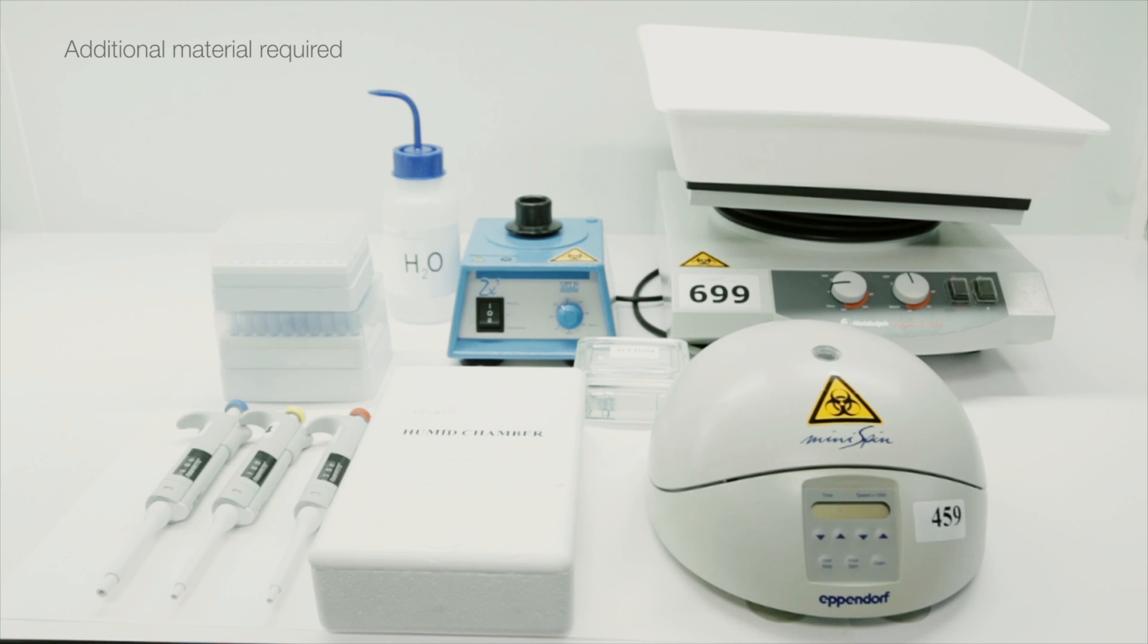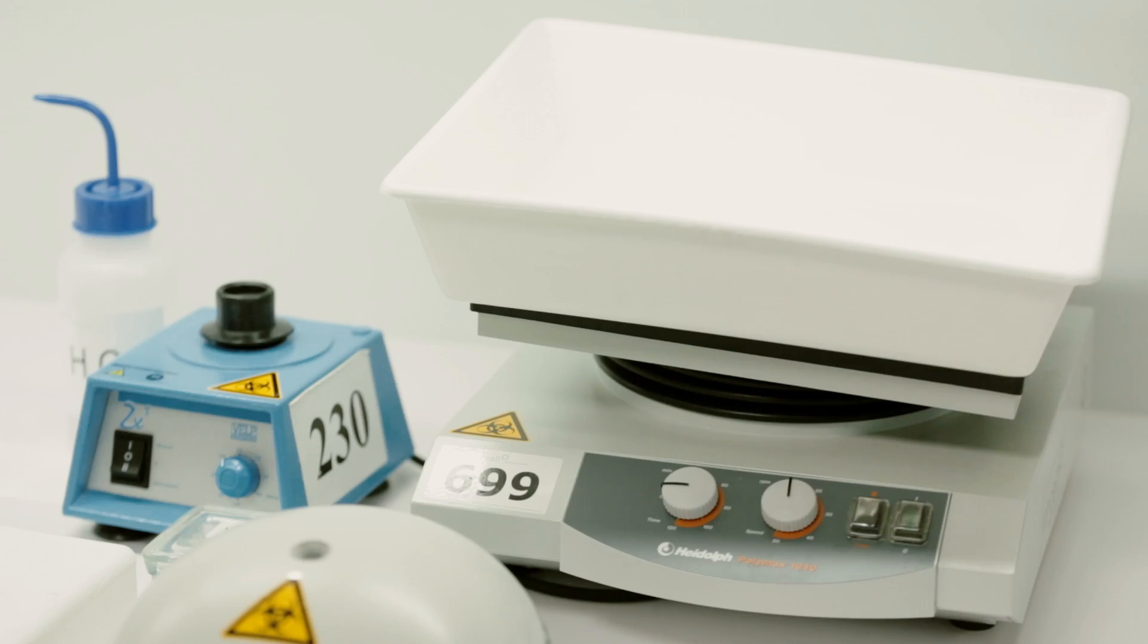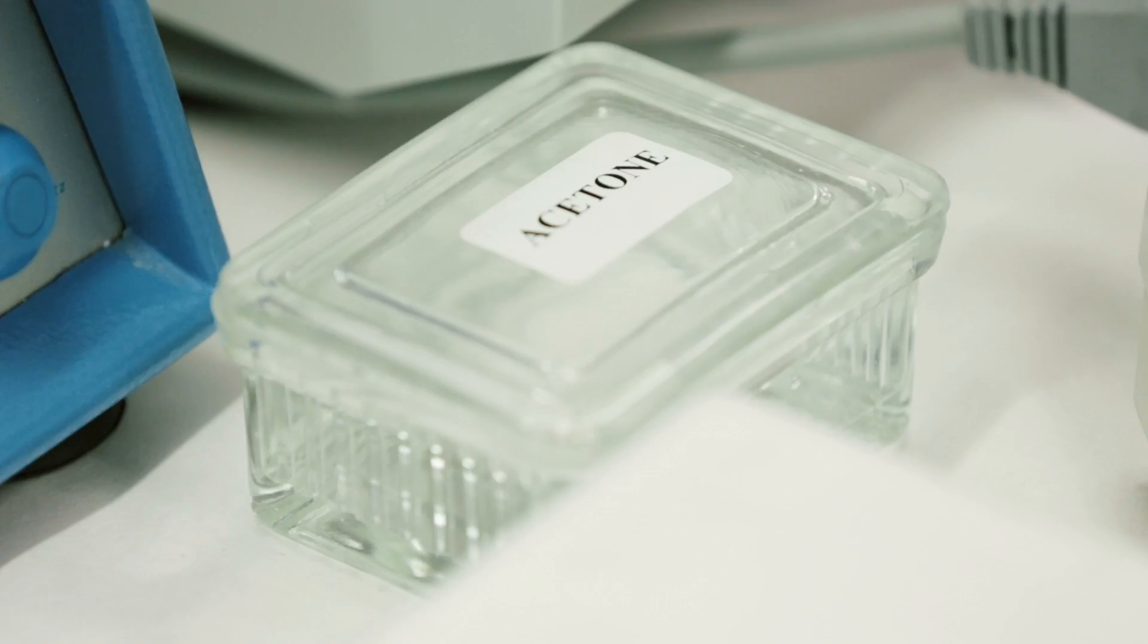In order to perform the analysis, you will need adequate precision micropipettes, a centrifuge with swinging rotor giving at least 1500 Gs, a thermostatized incubator, deionized water, vortex shaker, and acetone.